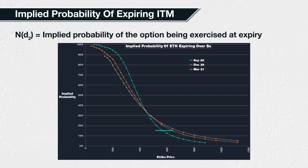For December, the implied probability of the underlying price being over $650 is about 15%. For the March 2021 expiry, the implied probability of the underlying price being over $650 is about 17%.